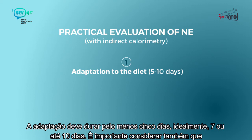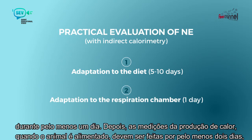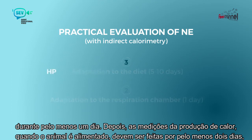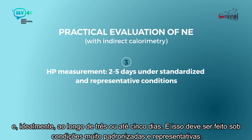One important fact is that the animal is kept in the respiratory chamber, which is a closed room, and it is important to adapt the animal to the respiratory chamber itself for at least one day. Afterwards, the measurements of heat production when the animal is fed should be done for at least two days, and ideally over three or even five days, under very standardized and representative conditions.